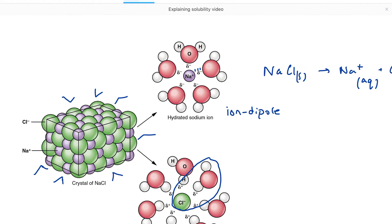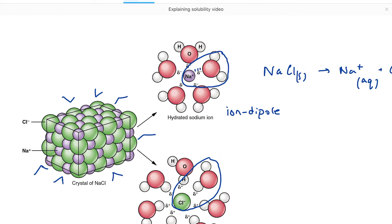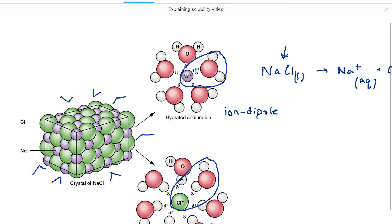The energy released when we form these new attractions goes some way to balancing the energy that went in to break up our lattice. Because if we think about it, we've got to put energy in to overcome the attraction between the sodium ions and the chloride ions in the lattice.